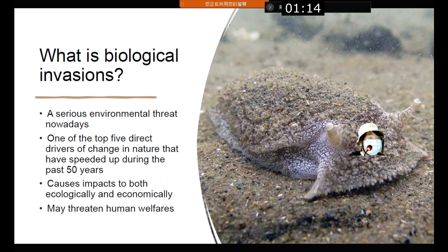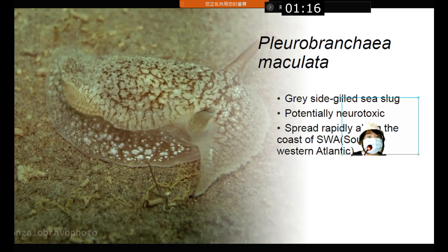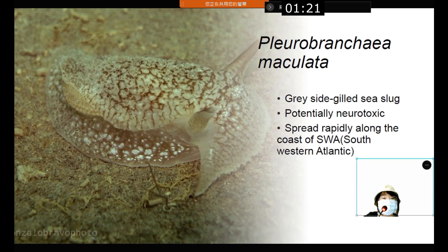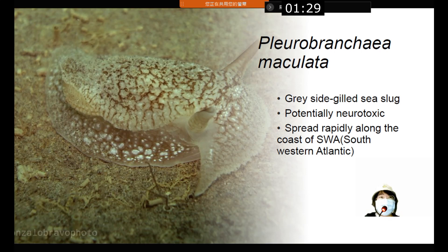It may threaten human welfare too. This is a sea slug — a gray-sided gilt sea slug and potentially neurotoxic, meaning there are toxins that it releases which will damage nerve tissues. It is also spreading very rapidly nowadays along the coast of the South-Western Atlantic.